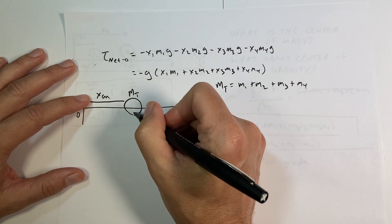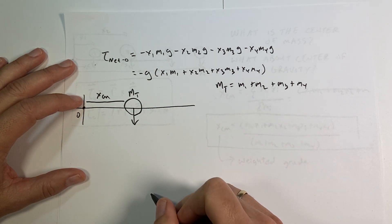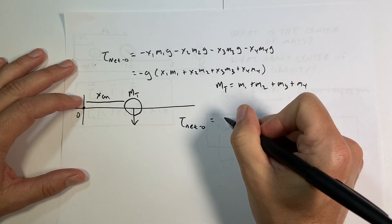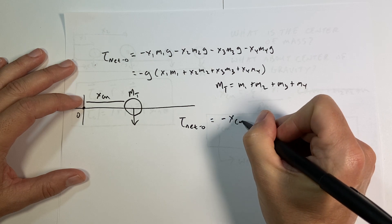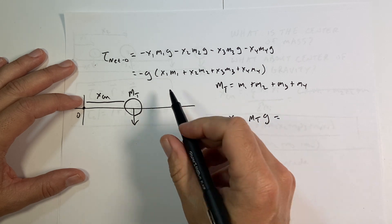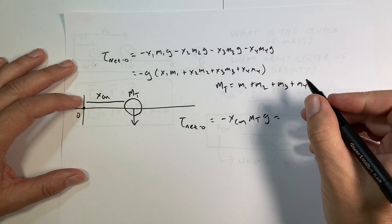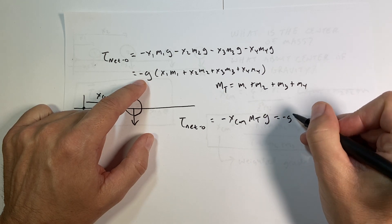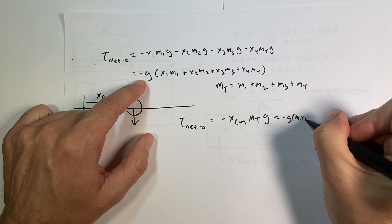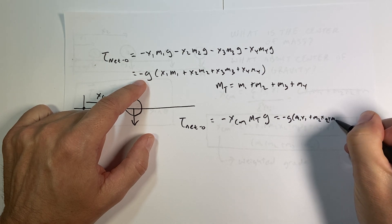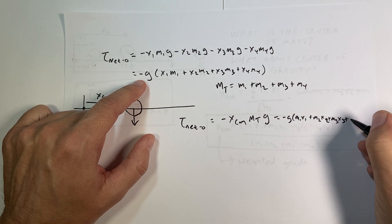So I'm going to say the torque due to this, it's going to be equal to - that has a gravitational force - torque net O is going to be negative x center mass m total g. And that has to be equal to all of this, which I'm going to run out of room, that's fine.